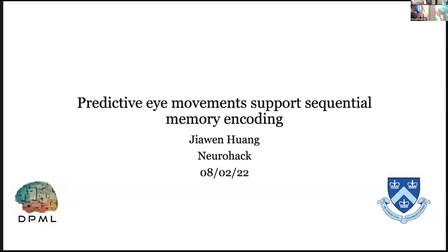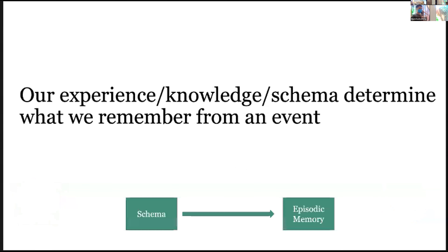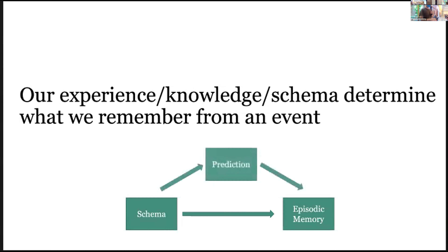Today I'll be talking about my master's thesis project on predictive event support for sequential memory encoding. Our prior knowledge — or schema — determines what we remember from an event. If I watch a sports game I know nothing about, I won't remember much. If I watch a video game I play, I'll remember a lot. Our knowledge influences what we remember. I'm focusing on the role of prediction: our knowledge allows us to make predictions about what's coming next, and that helps us remember.